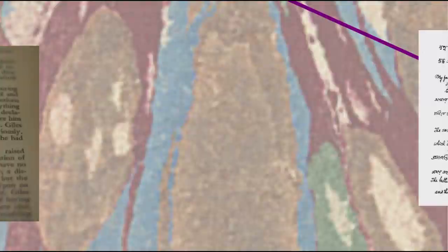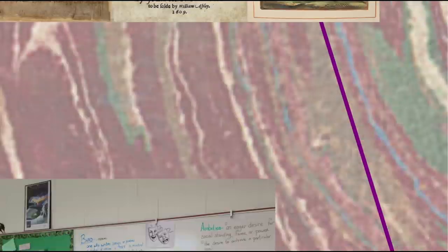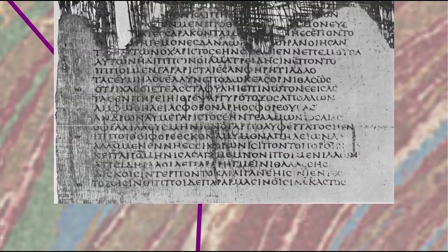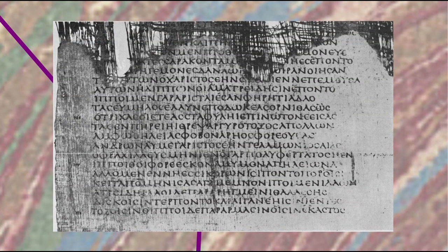Every culture around the world has its own rich poetic tradition, with many different defining characteristics and social roles, but for now we're going to focus on the European, and specifically English, literary tradition, and to understand English poetry we actually have to go back to Greek literature.